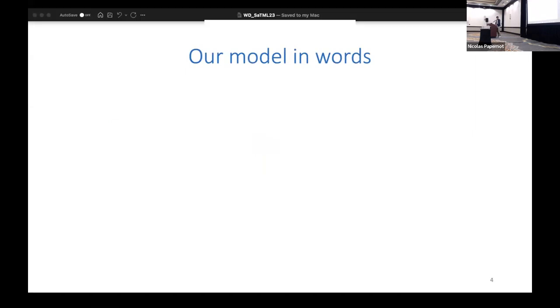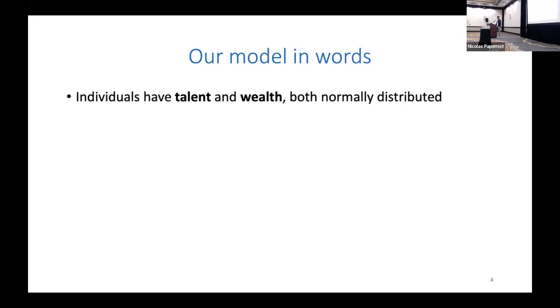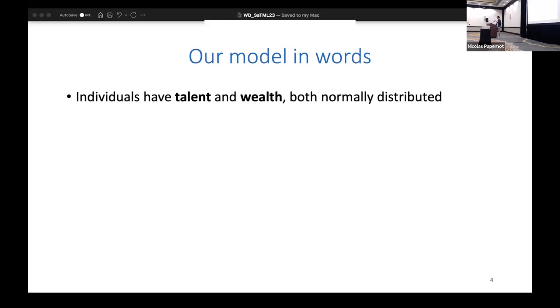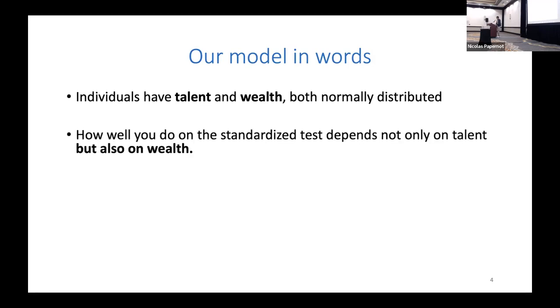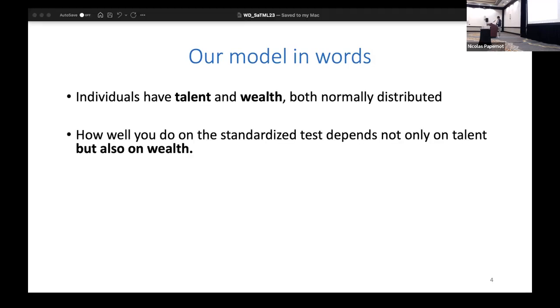Let me describe our model in words. You have individuals that have both talent and wealth; both of these are normally distributed, these are Gaussians. How well you do on the SAT or the standardized test depends not only on your talent but also on what wealth you have. I'll give some evidence for the dependence on wealth in the next slide.